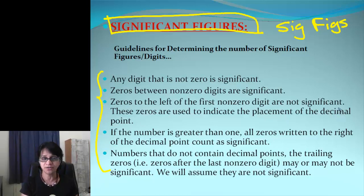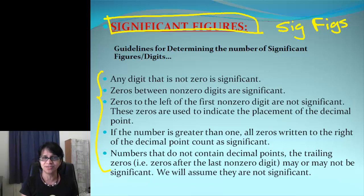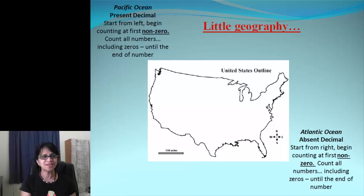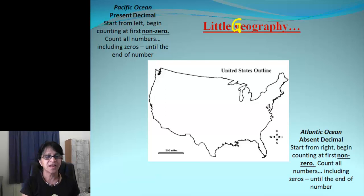I'm going to tell you a secret — I am not going to use any one of those rules. I am going to use a simple trick method for finding out sig figs. What we have is a little geography: a map of the United States.